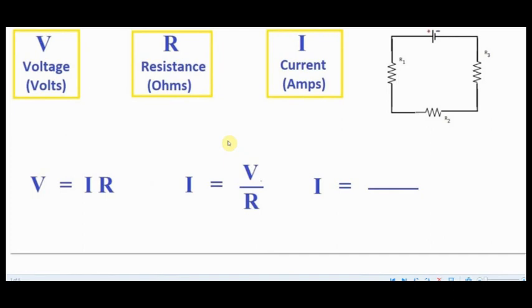So if I know the voltage, in other words the DC voltage of the battery, and if I know the resistance in a circuit, I can determine the current that should flow in that circuit.